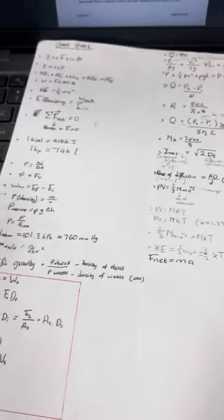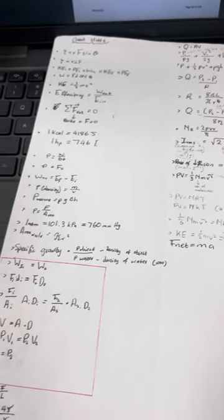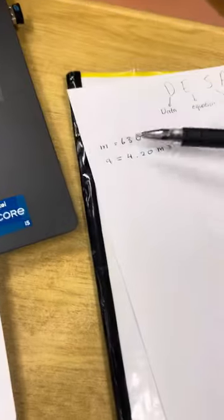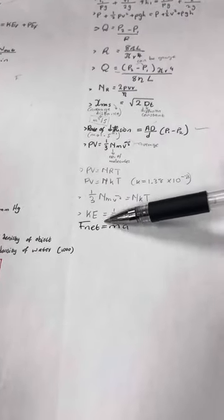I have a cheat sheet here. For you, you'll be given a formula sheet. Among these formulas, you will look for a formula that has mass and acceleration. From my knowledge, it is this one: F_net equals m times a.